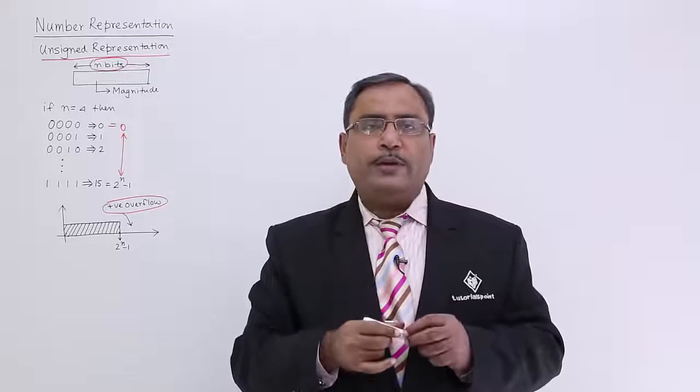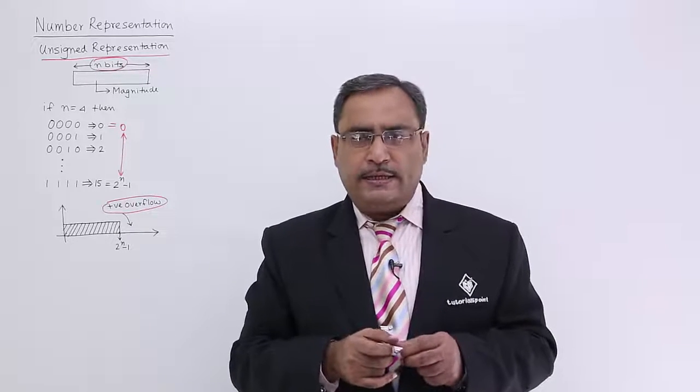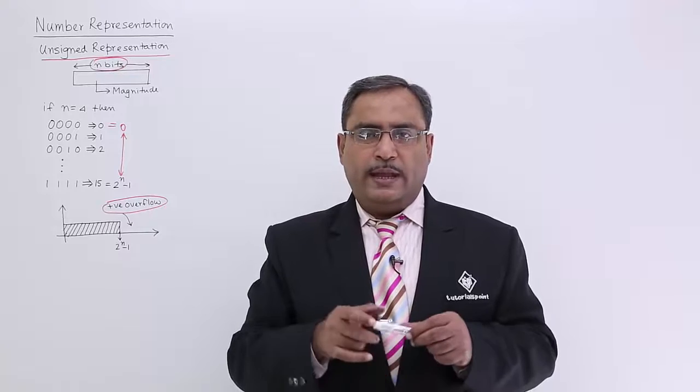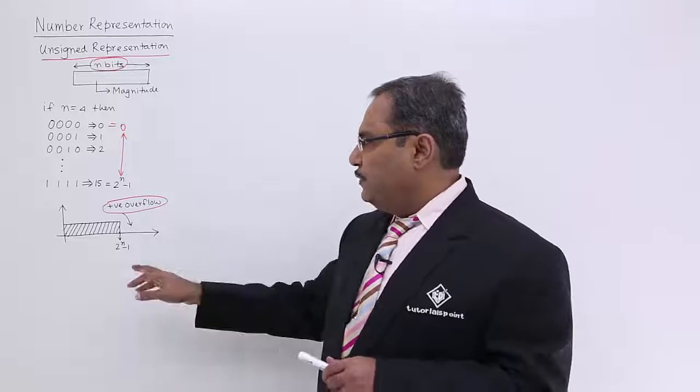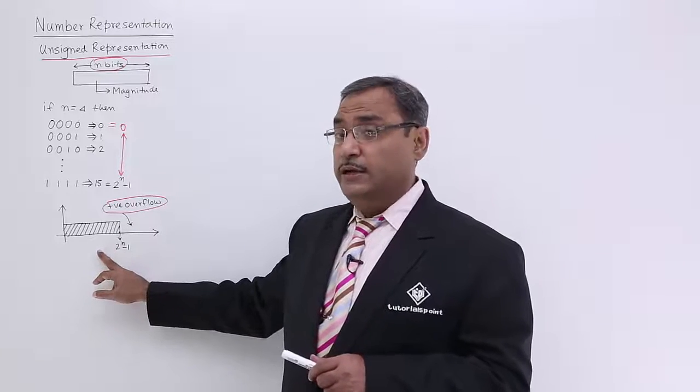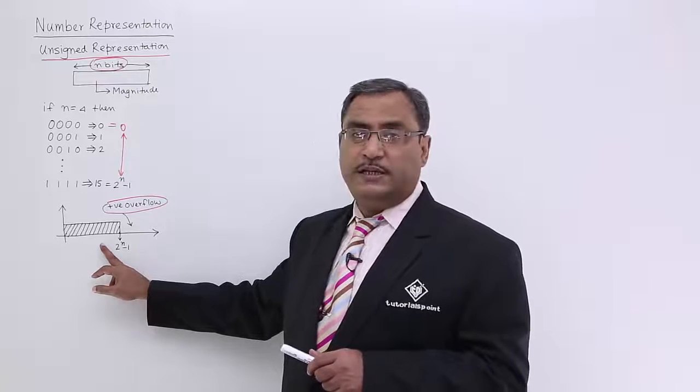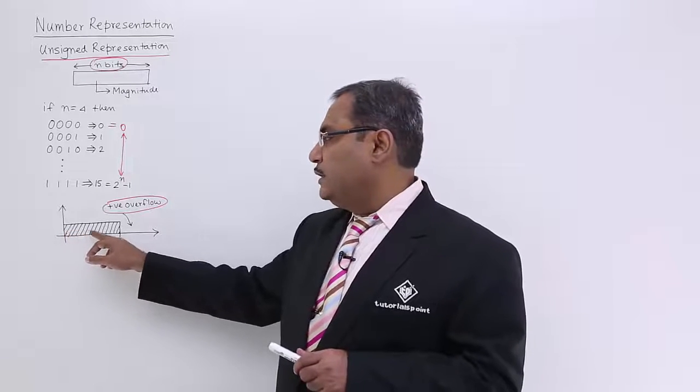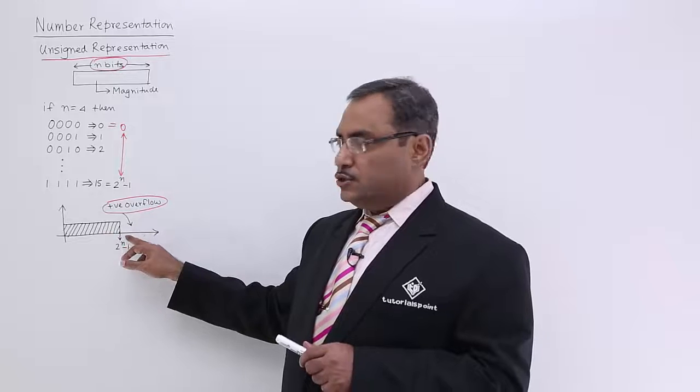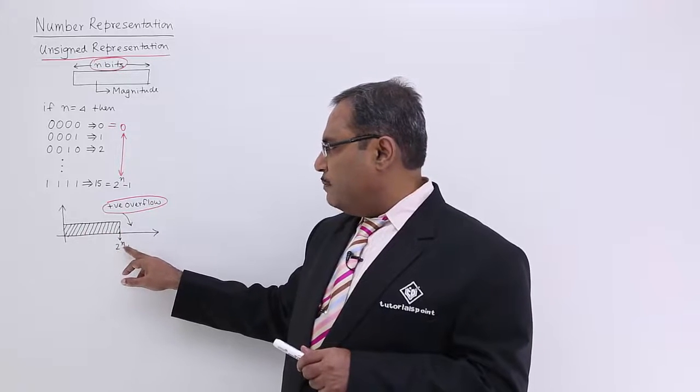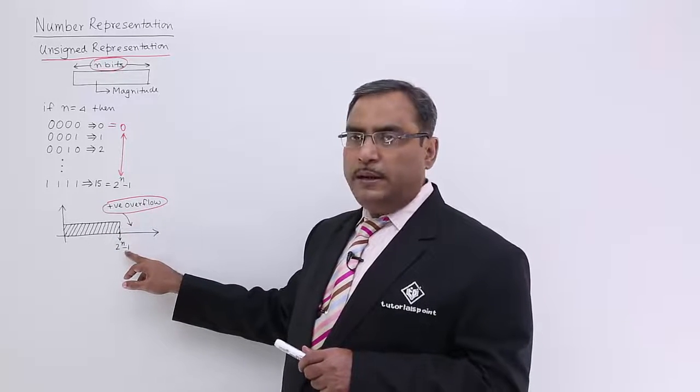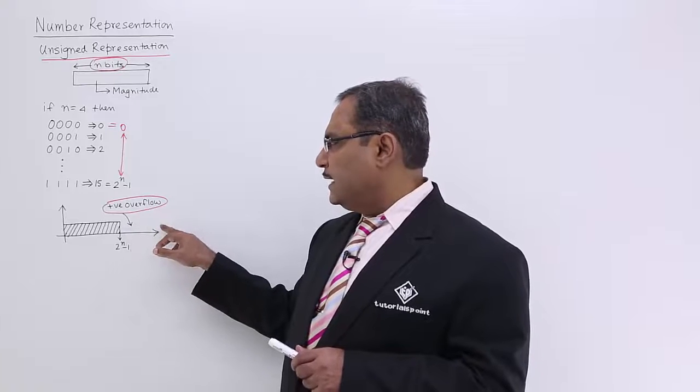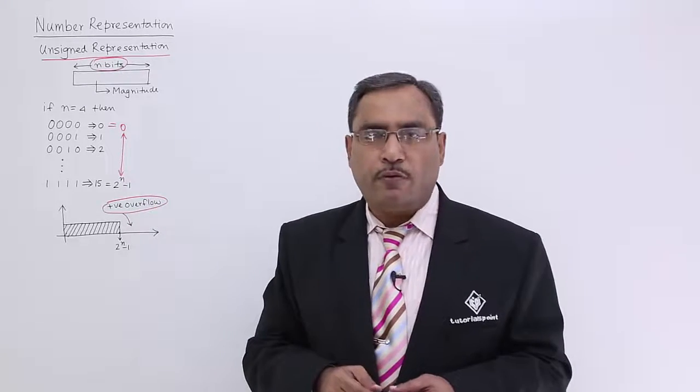That is the range in which we can express unsigned numbers with n number of bits. If you go for range specification graph, this is known as range specification graph. Here I am denoting the combinations. Up to 2 to the power of n minus 1, the number can be represented. After that, it is causing positive overflow.